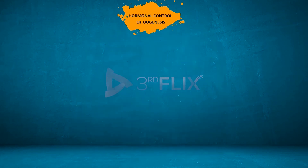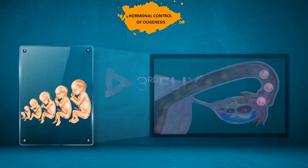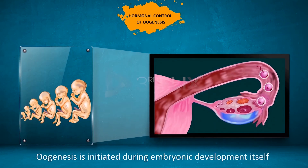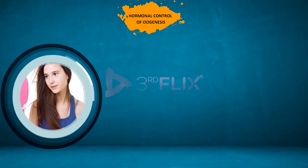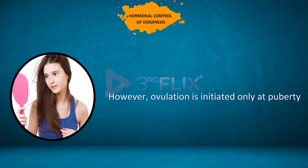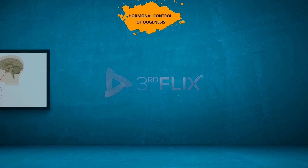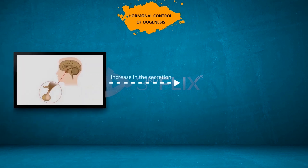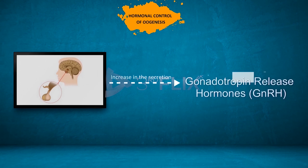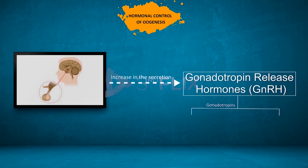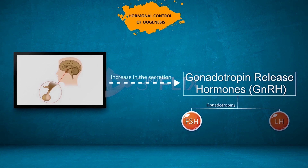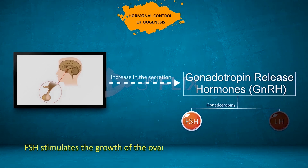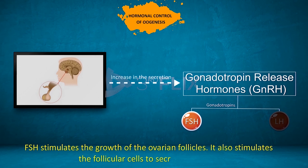Hormonal control of oogenesis. Oogenesis is initiated during embryonic development itself. However, ovulation is initiated only at puberty. At puberty, there is an increase in the secretion of the gonadotropin releasing hormones, GnRH, from the hypothalamus. These hormones stimulate the anterior pituitary to secrete the gonadotropins FSH and LH. FSH stimulates the growth of the ovarian follicles and also stimulates the follicular cells to secrete oestrogens.